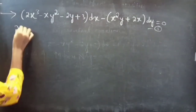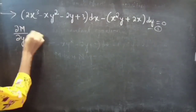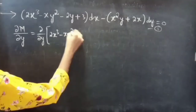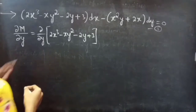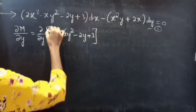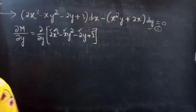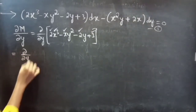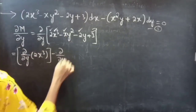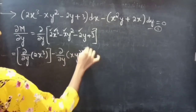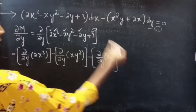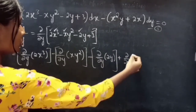So firstly we will find the partial derivative of M with respect to y. M = 2x³ - xy² - 2y + 3. Since we are doing partial derivative with respect to y, we will treat x as constant, so 2x³ and 3 are constants here. This equals the partial derivative of each term: first term, minus second term, minus third term, plus last term.